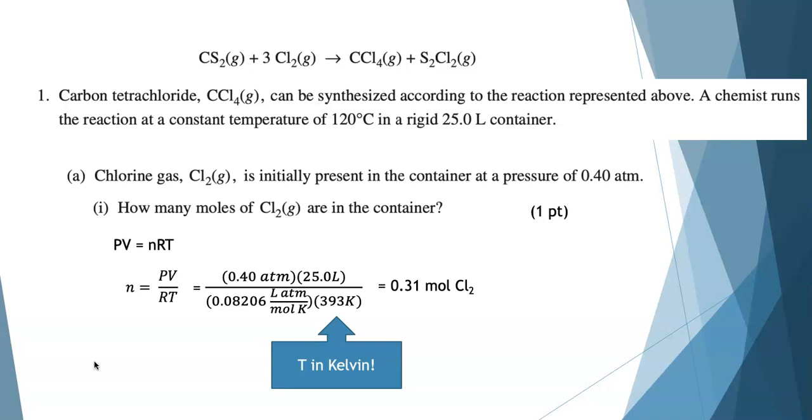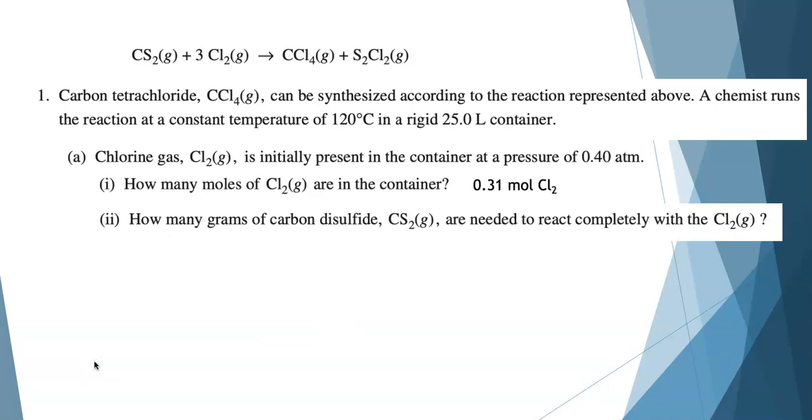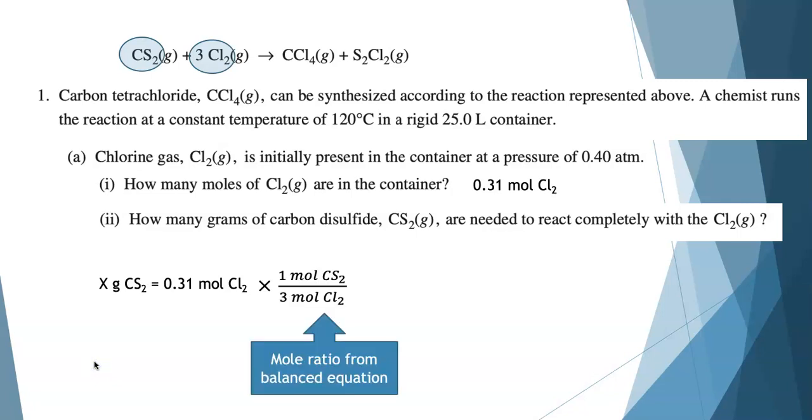That's what we needed to have for one point: the supporting work and a correct answer. Then the question goes on: how many grams of carbon disulfide are needed to completely react with this amount of Cl2? We just calculated 0.31 moles of chlorine gas, so we're going to use that. We can look at the balanced equation and see there's one mole of CS2 for three moles of chlorine gas. I'm going to use the mole ratio from the balanced equation and the molar mass of CS2.